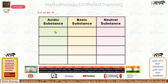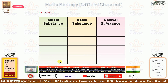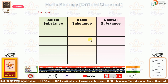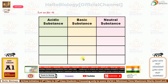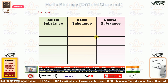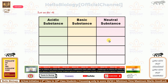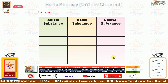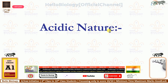Acidic substances include apple juice, pineapple juice, mango juice, and lemon juice. Basic substances include soap, shampoo, washing powder, and baking soda. Neutral substances include water and salt. But today's actual topic is about the basic nature of acids and bases.